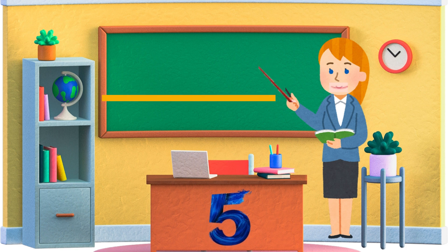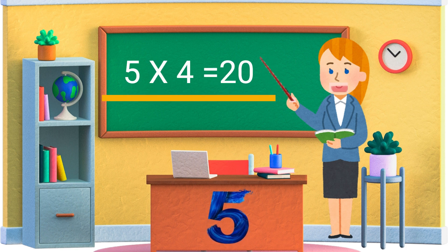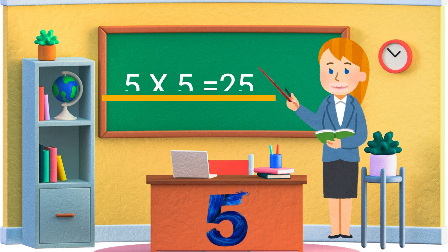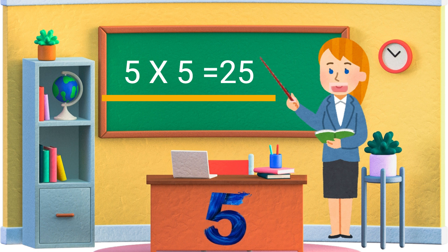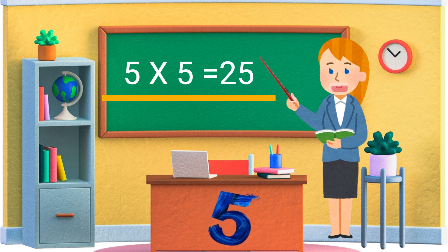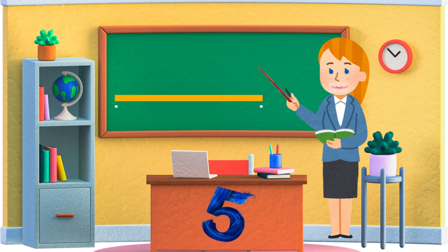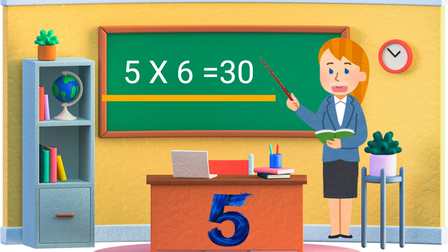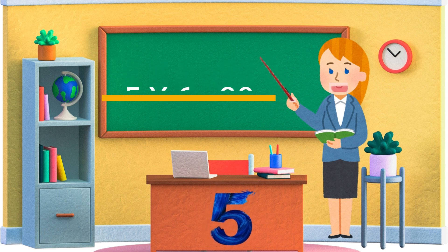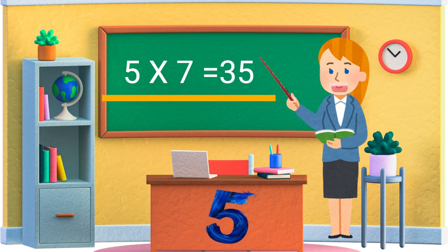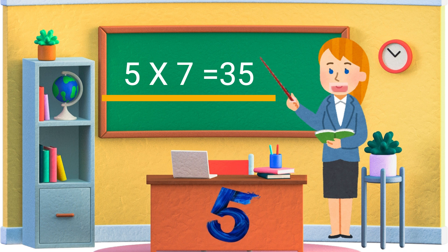5 fours are 20, 5 fives are 25, 5 sixes are 30, 5 sevens are 35.